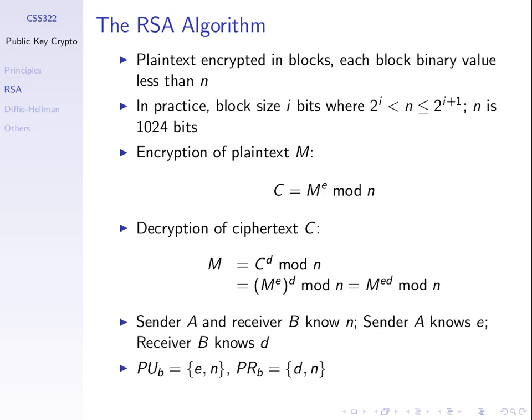Taking the decryption equation and replacing C with M to the power of E mod N — that value of C — all raised to the power of D, mod N. Using the properties of modular arithmetic, we can take the mod out of the brackets. It becomes M to the power of E, all to the power of D, mod N. When we do multiple mods by the same modulus, it's just the same as doing one mod. And by the simple property of exponents, that equals M to the power of E times D, mod N.